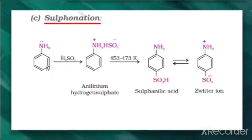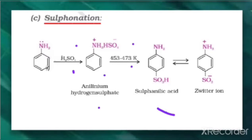When we talk about sulfonation: aniline reacts with concentrated H2SO4 to form anilinium hydrogen sulfate, which on heating with sulfuric acid at 453 to 473 Kelvin produces para-aminobenzene sulfonic acid, commonly called sulfanilic acid. So sulfanilic acid is formed — first with H2SO4 it gives anilinium hydrogen sulfate, which on heating gives the product sulfanilic acid.